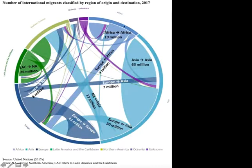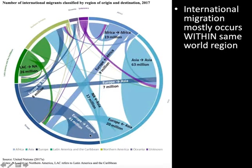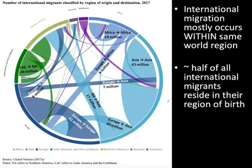Within the African continent we have around 20 million people moving within the continent. Within Asia, around 63 million — the largest population of people on the move within a region. People moving from the African continent into Europe represent a far smaller number, 9 million for example. We also have people moving within Europe, which is another very large population group moving within their region of birth. So it's important to recognise that international migration is mostly occurring within the same world region; about half of all international migrants remain within their region of birth. We need to be very careful and cautious about what we mean when we use the language of international migration.